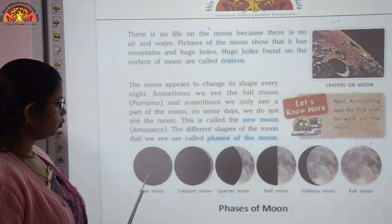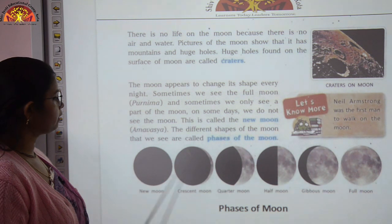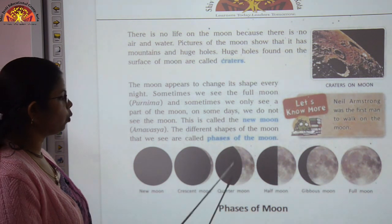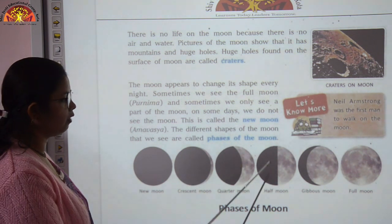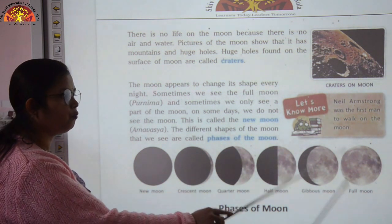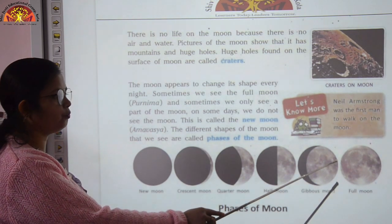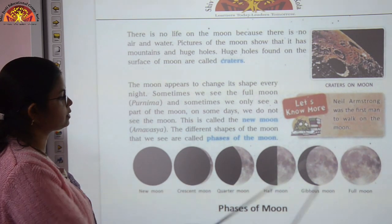The phases of the moon are: new moon — when we cannot see the moon in the sky; crescent moon; quarter moon; half moon; gibbous moon; and full moon — when we see the complete moon in the sky.